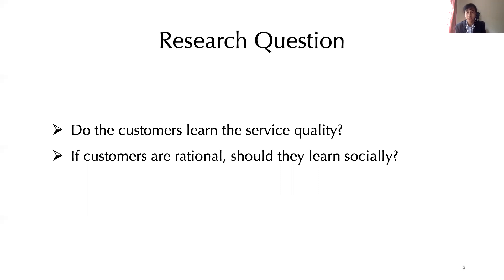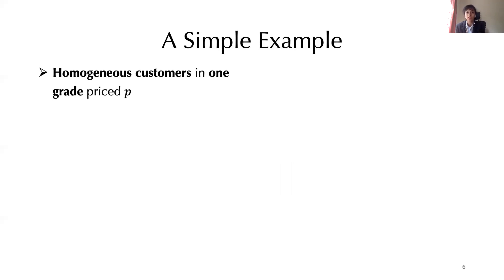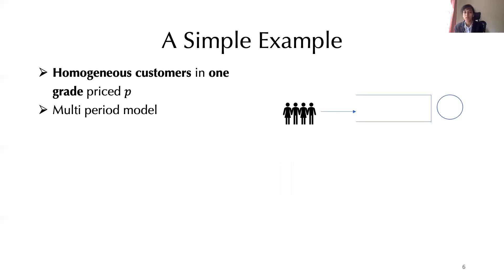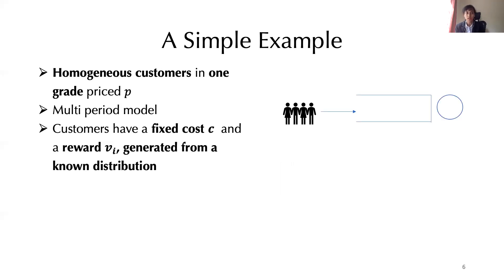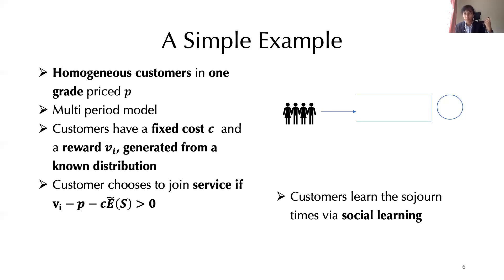Before we delve into the details, let's consider a simple example using a queuing setting, which is very traditional in service differentiation. We consider homogeneous customers being served in one service grade priced at a fixed price P. It's a multi-period model where customers decide whether to opt for service or not. Customers all have a fixed cost C of obtaining service and obtain a reward V upon completion, and will only choose service if their perceived benefit overrides the cost. Their belief about perceived quality is formed by social learning — using experiences of other customers in conjunction with their own interactions with the firm.